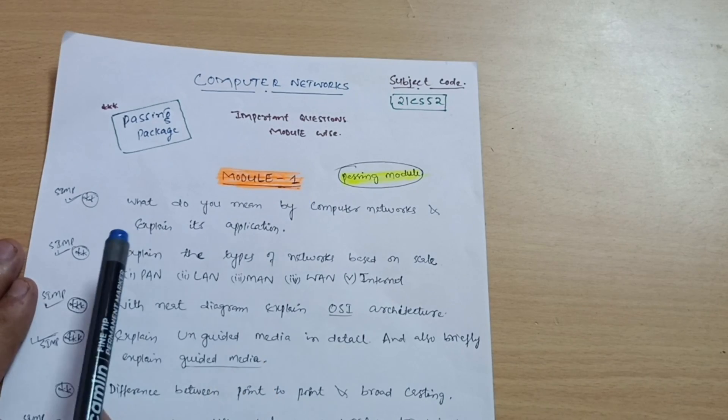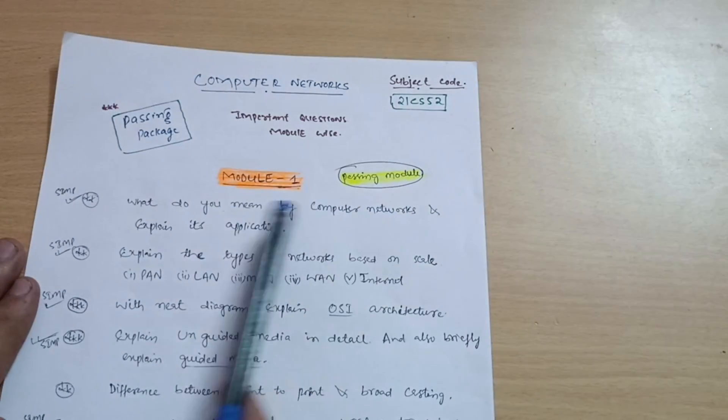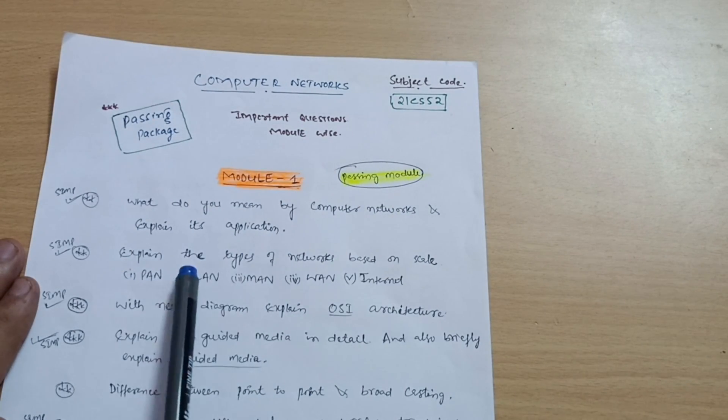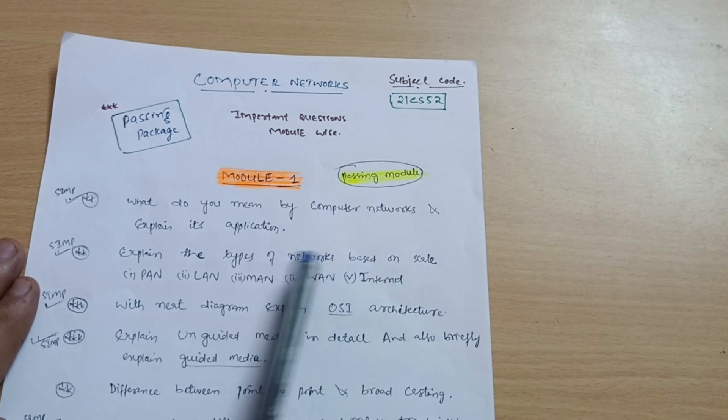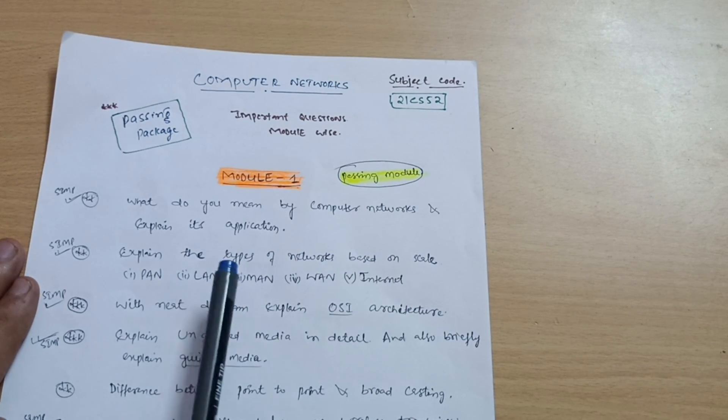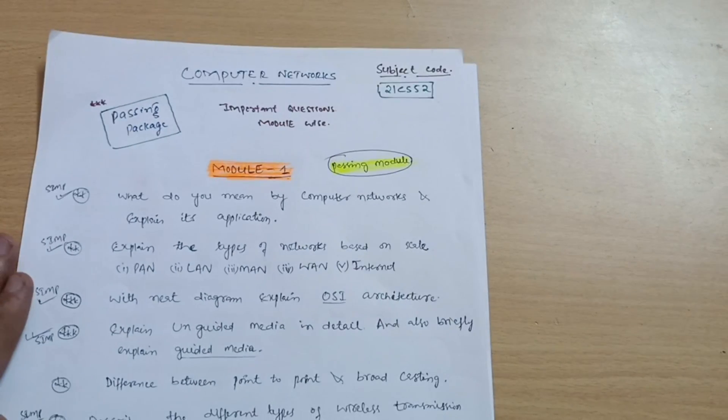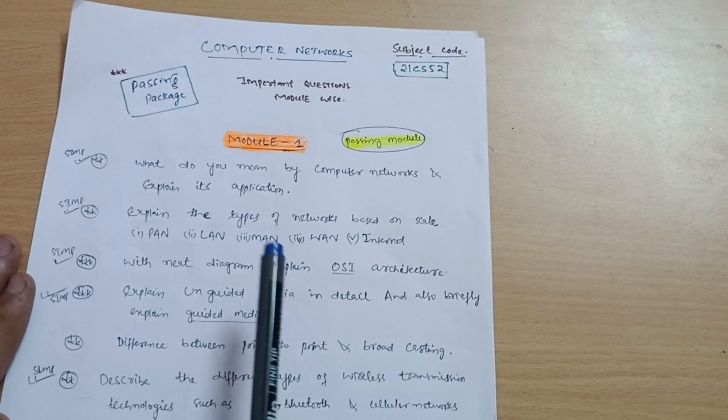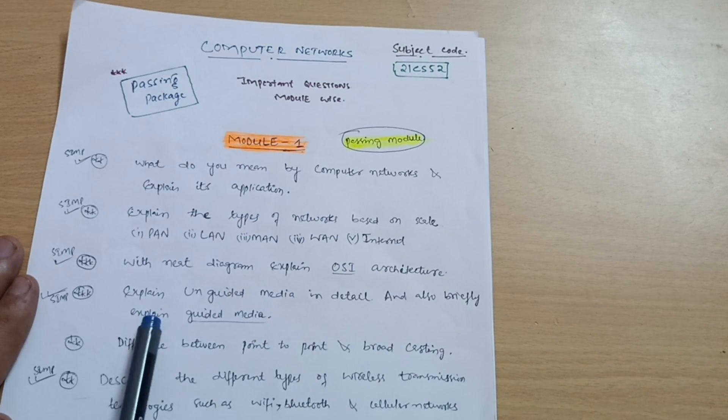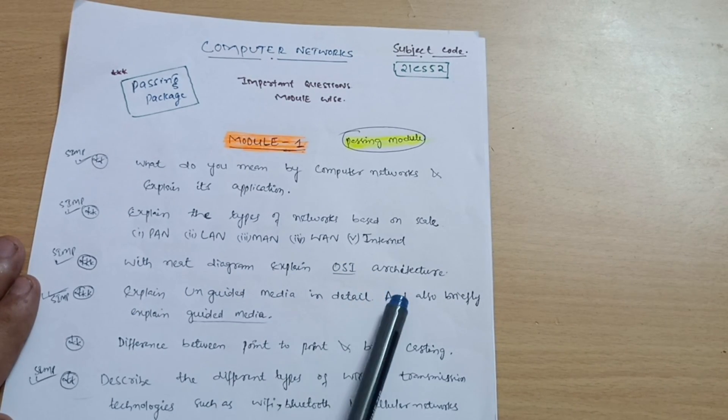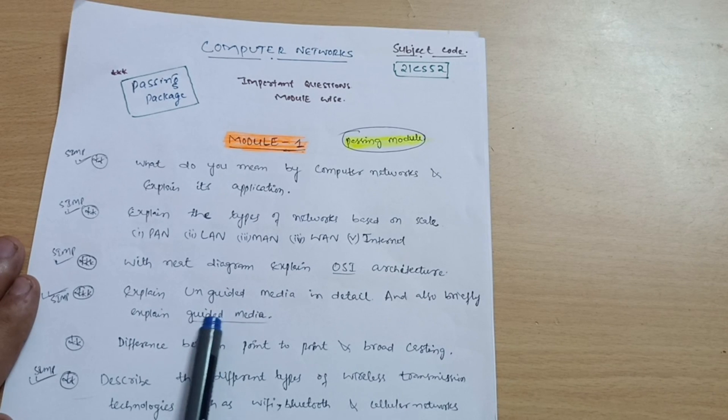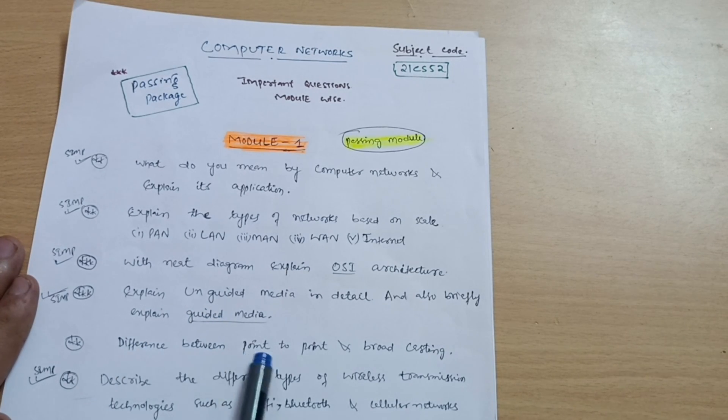Module 1: What do you mean by computer networks and explain its application. Explain the types of networks based on scale - PAN, LAN, MAN, WAN and Internet. With a neat diagram, explain OSI architecture. Explain unguided media in detail and briefly explain guided media. Next is difference between